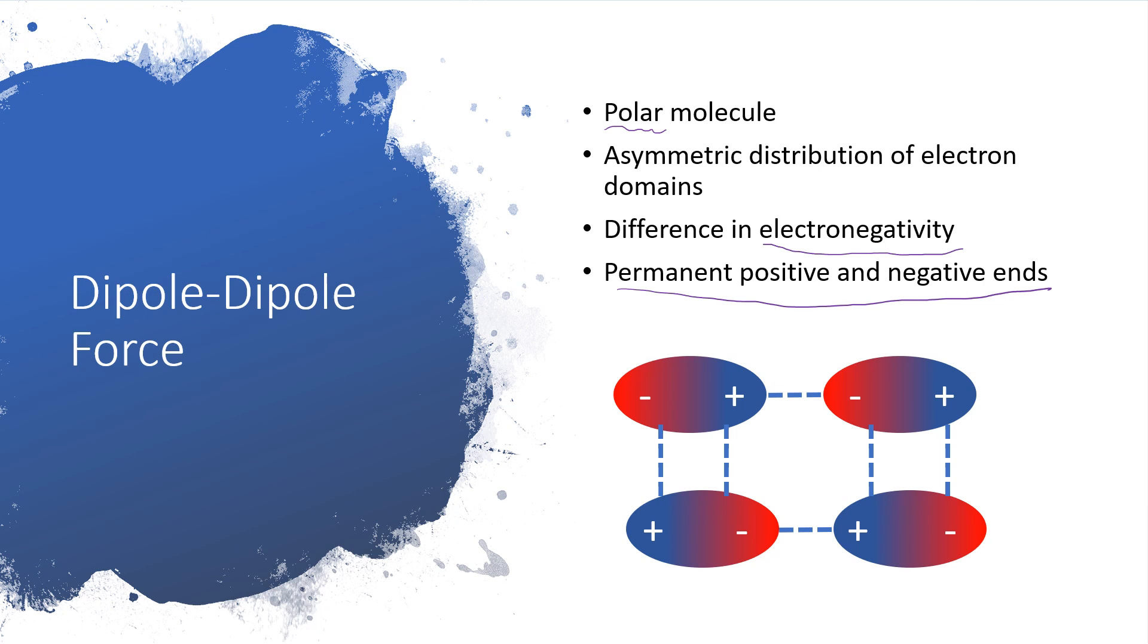And as we see in this illustration in the bottom right corner, if you have a positive end on one molecule, it can be attracted to the negative end on another nearby molecule. And in the solid phase, molecules tend to line up this way so that the positives and the negatives are pointed towards each other to maximize those forces of attraction.